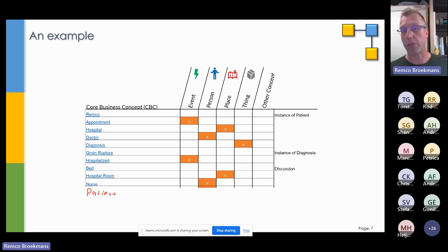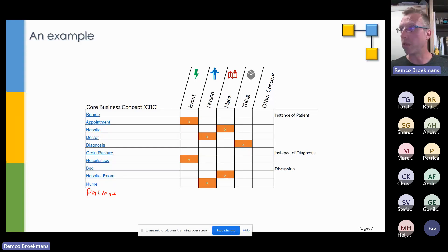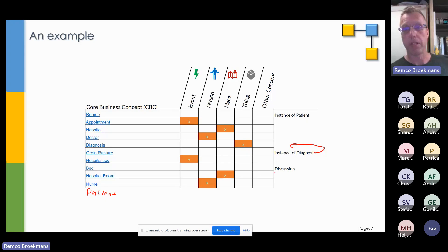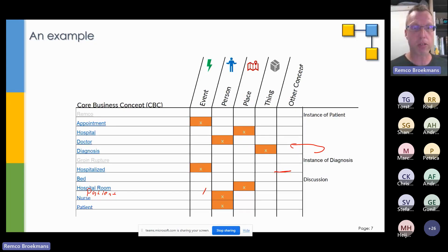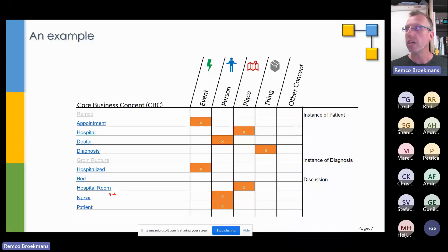Appointment — that really is an event. Hospital — it's a place. Doctor — it's a person. Diagnosis — let's call it a thing. Groin rupture is, in fact, one of the possible diagnoses you can get in the hospital. Hospitalized — it's an event. A bed — we got a lot of discussion about what a bed was, come to that later. Hospital room — a place. Nurse — it's a person. And then we get patient — a patient is also a person. So this is finally what I'm going to have as input for my model.